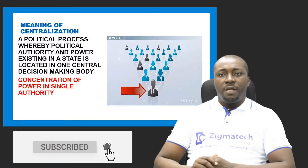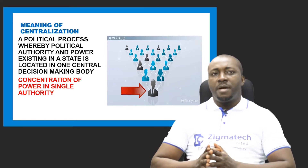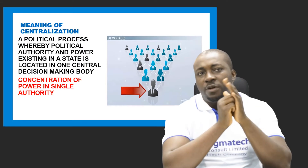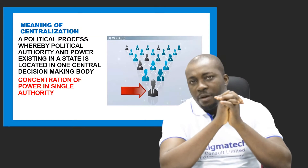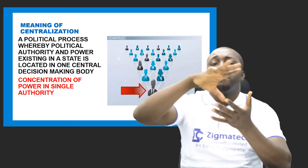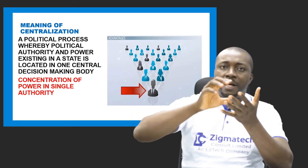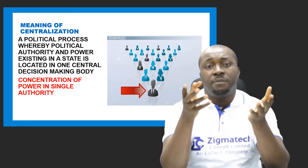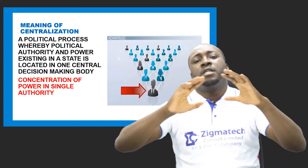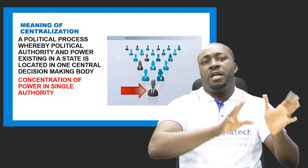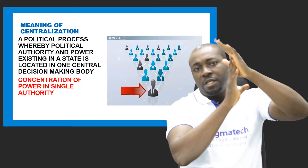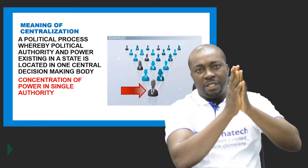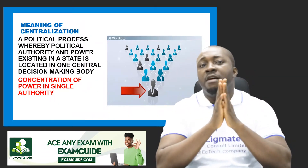What is the meaning of centralization? Centralization is a political process or administrative system whereby political authority and powers existing in a state are located in one central decision-making body. It is the concentration of power in a single authority. We are describing what is obtainable in a unitary system of government, where all political and decision-making powers are located in one central body, and from that central body all other powers derive.